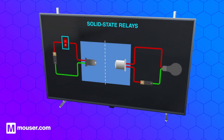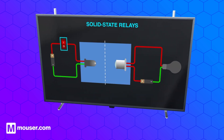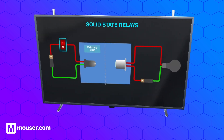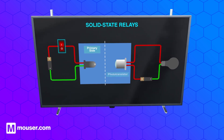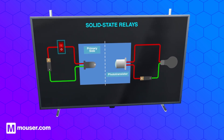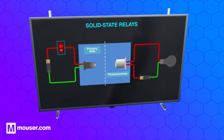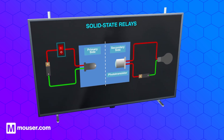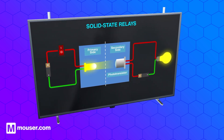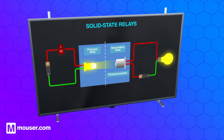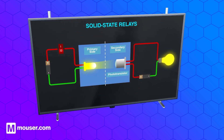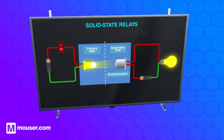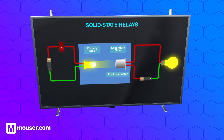Solid-state relays typically use an LED in the primary circuit and a photo transistor or light-dependent switch in the secondary circuit. When the LED is switched on, the photo transistor allows current to flow, switching the secondary circuit load. Again, the two circuits are electrically isolated from each other.